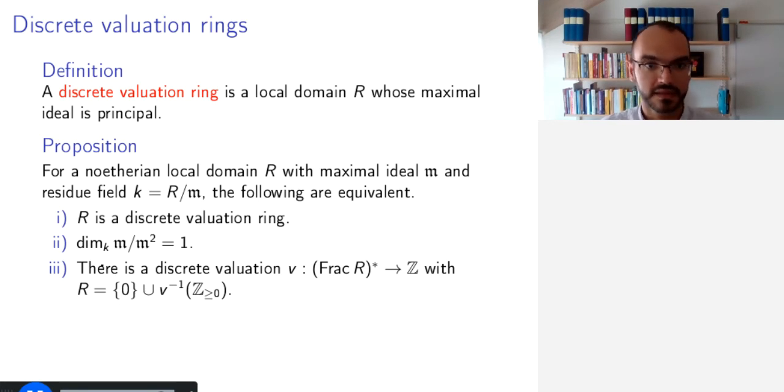Second, the dimension of the K vector space M mod M squared is equal to 1. And third, there is a discrete valuation from the non-zero elements of the fraction field of R to the integers, such that the ring R itself has zero and all the elements with non-negative values.